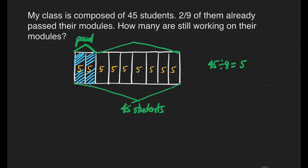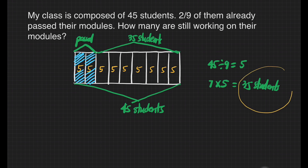How many boxes do we have? That's 7 boxes times 5. So 7 times 5 is equal to 35 students. So the final answer is 35 students who are still working on their modules.